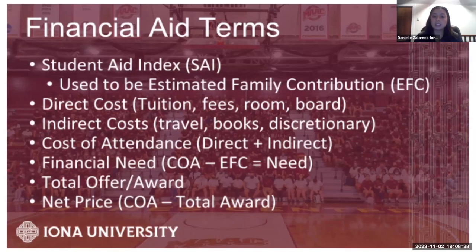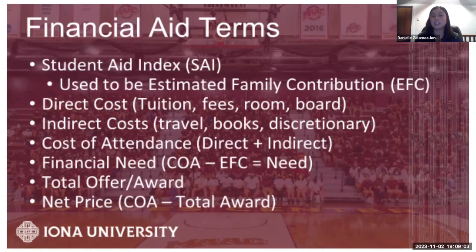Your financial need is also a simple formula: cost of attendance minus your SAI — which used to be EFC — equals your financial need. Then there are total offers and awards, which is essentially what you're receiving from the institution, including scholarships. And lastly, your net price is your cost of attendance minus your total award — so the net price is what you're paying out of pocket.